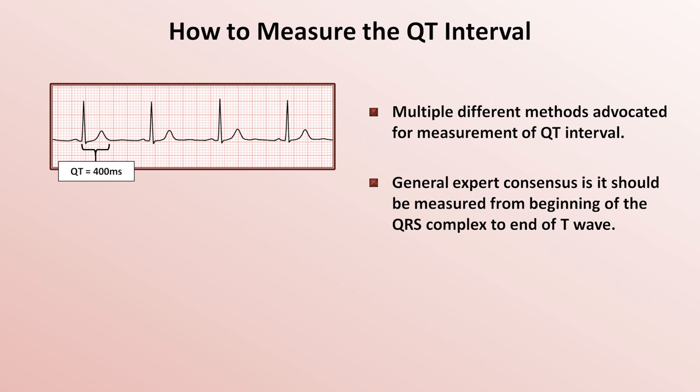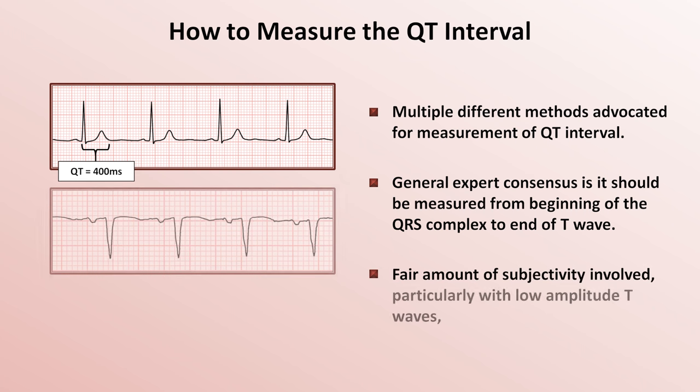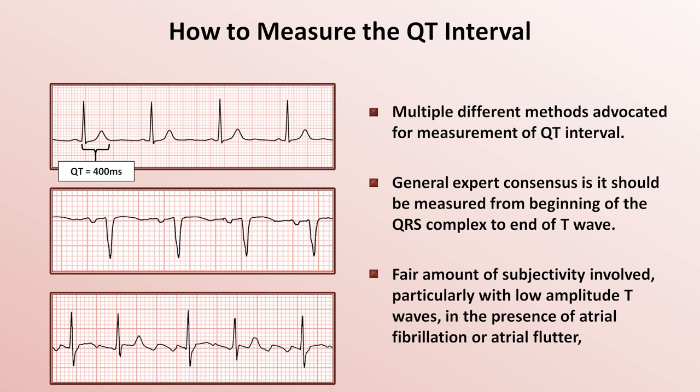or 400 milliseconds. That probably seems quite easy. However, there is a fair amount of subjectivity involved, particularly with low amplitude T waves, in the presence of atrial fibrillation or atrial flutter which can obscure T waves, or in the presence of signal artifact. Accurately measuring the QT interval in either of the bottom two example strips is impossible.